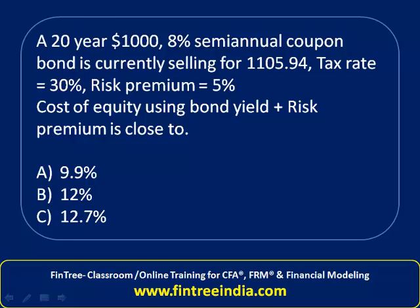A 20-year, $1000 bond with an 8% semiannual coupon is currently selling for $1105.94. The tax rate is 30% and the risk premium is 5%. We've been asked to calculate the cost of equity using the bond yield plus risk premium approach. Since we already have the risk premium, we need to calculate the yield of the bond, also referred to as YTM.